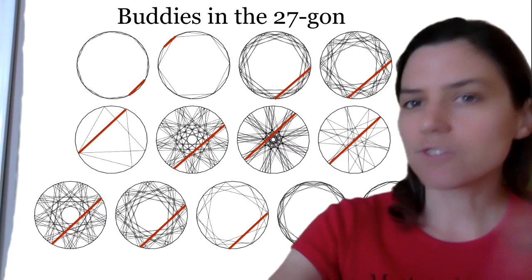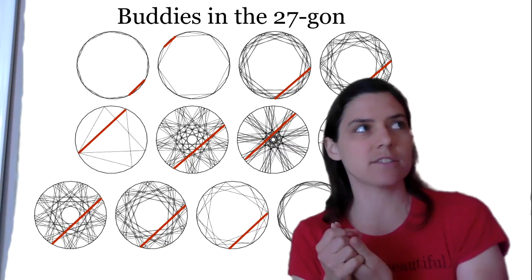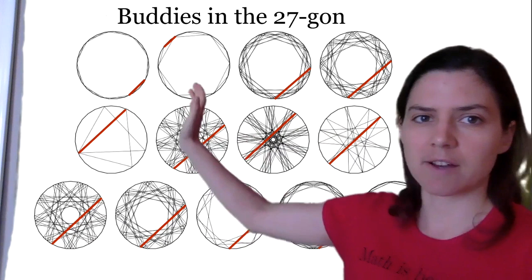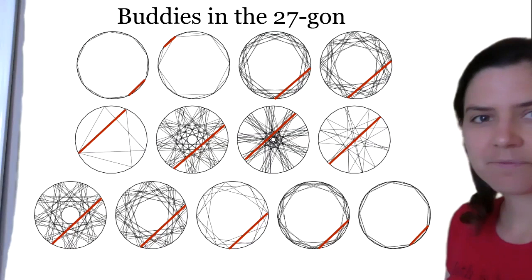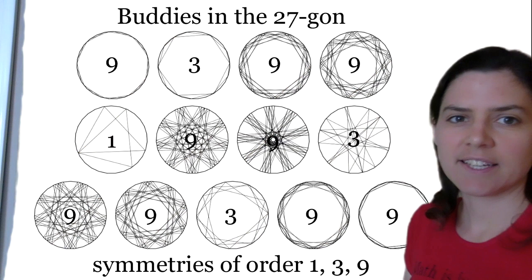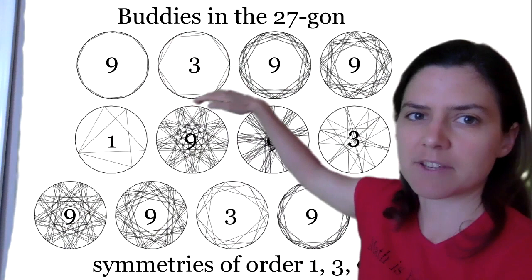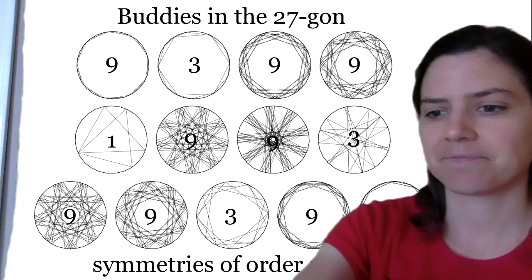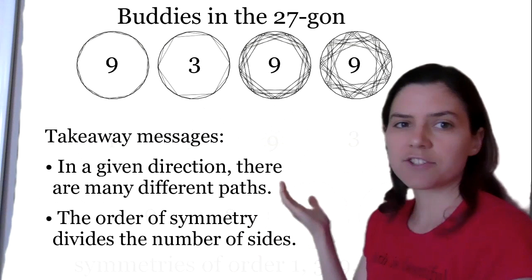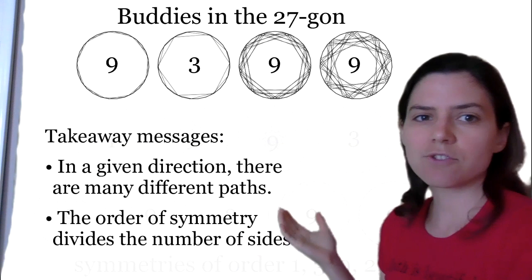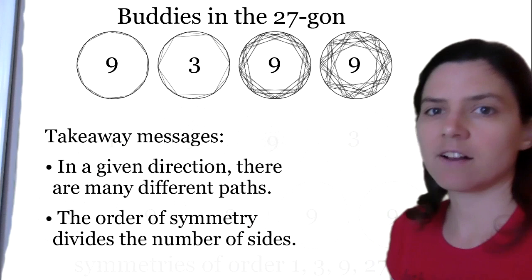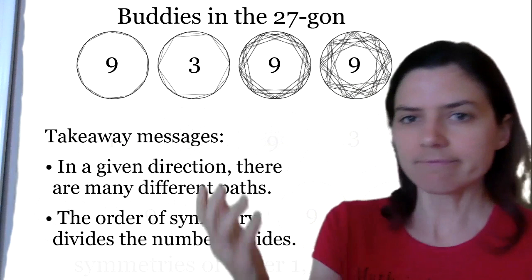You might think: 15 was 3 times 5. What happens if you have factors that are all the same? How about the 27-gon? Here we have parallel buddies in a non-horizontal direction and get all these beautiful paths. These have symmetries of order 1, 9, and 3. For example, one looks like a triangle, and another looks sort of like a hexagon, but it turns out it's only symmetric of order 3. The takeaway is that in a given direction there are many different paths — one for each cylinder — and that the order of the symmetry divides the number of sides. So 1, 3, and 9 all divide 27, and 3, 5, and 15 all divide 15.